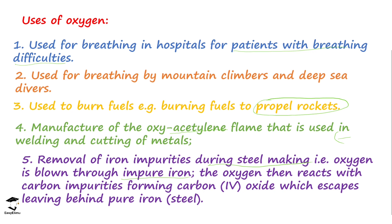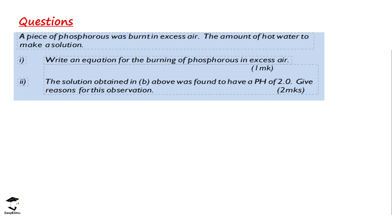Now we are going to look at some end-of-topic questions. The first question: a piece of phosphorus was burnt in excess air, and the product was dissolved in hot water to make a solution. Write an equation for burning phosphorus in excess air. Phosphorus can burn in a limited amount of air or in excess air. If it burns in excess air it forms phosphorus pentoxide (P₂O₅); if it burns in limited air it forms phosphorus trioxide (P₂O₃). So the equation we are writing is for phosphorus pentoxide — this produces white fumes.